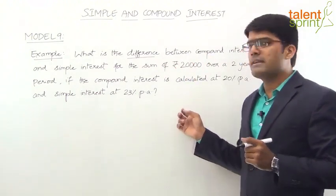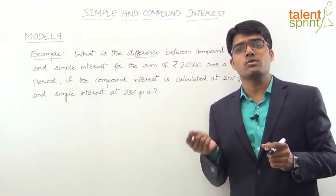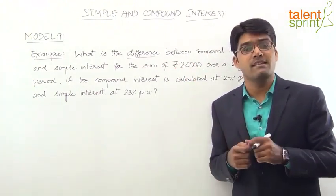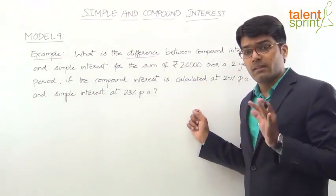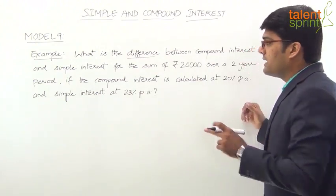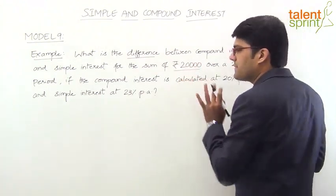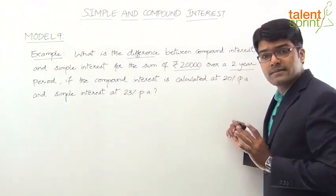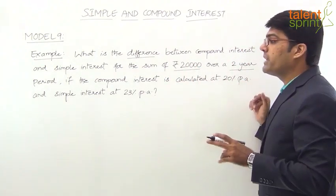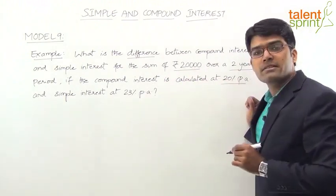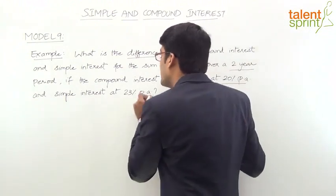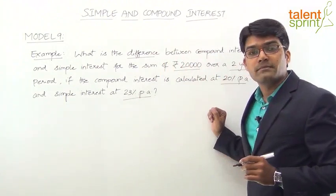If you think the difference between SI and CI, two-year period, then it is special. If you look at the question completely, there is a sum of 20,000, the principal amount is 20,000, the time period is 2 years. The important point is that the compound interest rate is 20% per annum and the simple interest rate is 23% per annum.